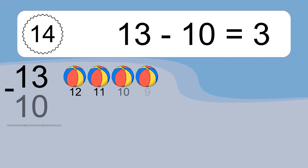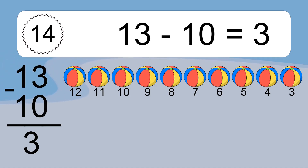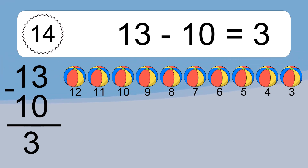13 minus 10 equals what? 13 minus 10 equals 3. Let's count it. 12, 11, 10, 9, 8, 7, 6, 5, 4, 3.